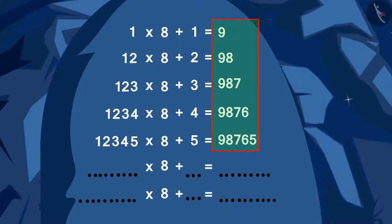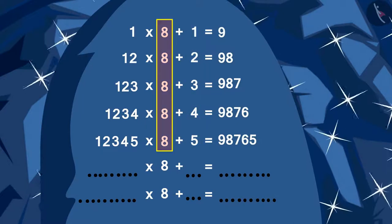And in the answer, the digits are written in a decreasing order matching the length of the number being added after multiplication.